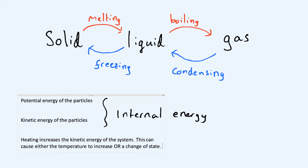If you start heating a solid, its temperature goes up until it starts to melt. When it's melting, the energy — rather than just going to the kinetic energy of the particles — breaks the bonds between the particles. In a solid, the particles are held together by strong bonds, and those bonds need to be broken. It is basically the heat you've added that's going to break those bonds.